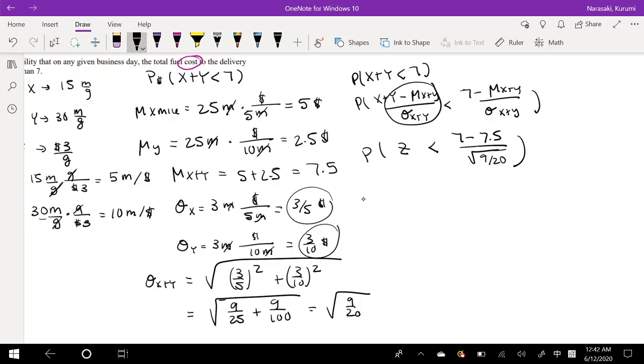And if I solve that problem out, I'm going to get 7 minus 7.5 divided by the square root of 9 over 20. So when I've typed it into the calculator, I got that the z was